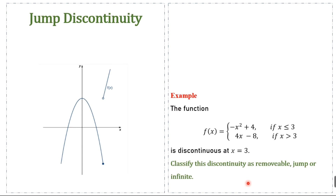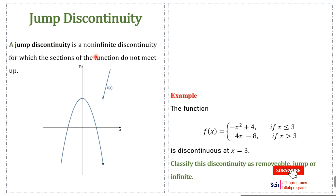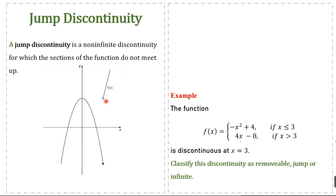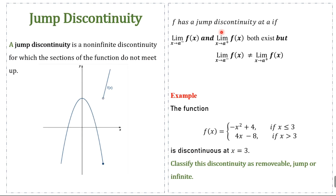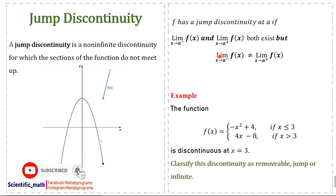The second type of discontinuity is jump discontinuity. A jump discontinuity is a non-infinite discontinuity for which the sections of the graph do not meet up. The definition: f has a jump discontinuity at a point a if the left limit and the right limit both exist but are not equal. That is the condition for a jump discontinuity.